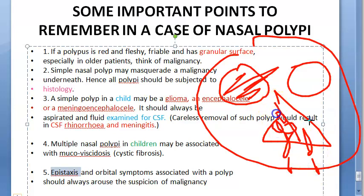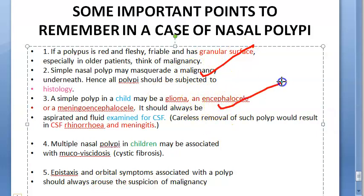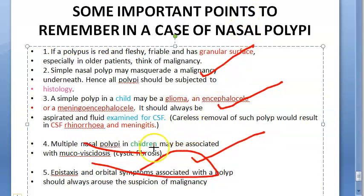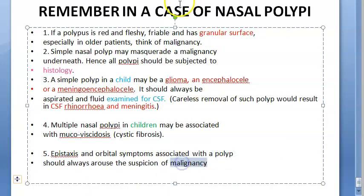Epistaxis and orbital symptoms associated with a polyp should always arouse suspicion of malignancy. Nasal polyps normally do not bleed on touch, so if there is epistaxis along with the polyp and orbital symptoms, suspect malignancy. To summarize the important points: suspect malignancy if red/fleshy/granular; suspect encephalocele/glioma in a child — check for CSF; multiple polypi in children suggest cystic fibrosis; epistaxis and orbital symptoms suggest malignancy.